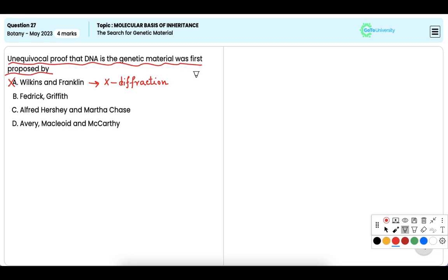Option B: Frederick Griffith. It is incorrect. Griffith's experiment demonstrated the phenomenon of transformation, but it did not prove that DNA was the genetic material.